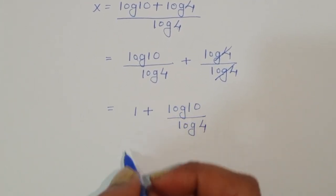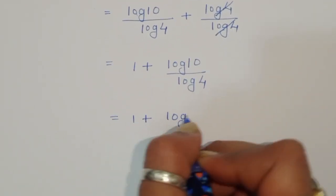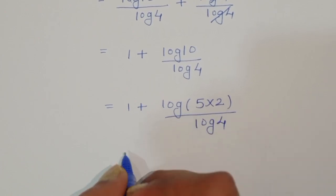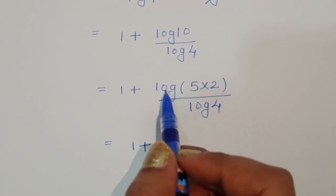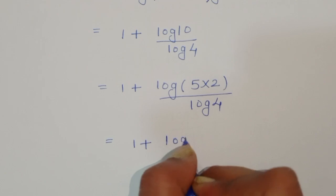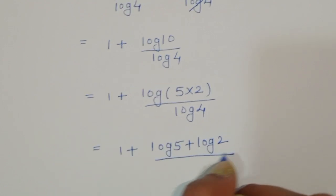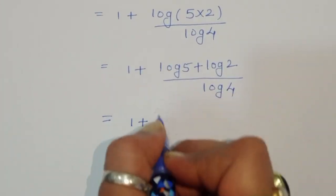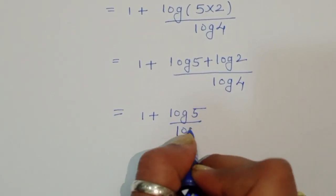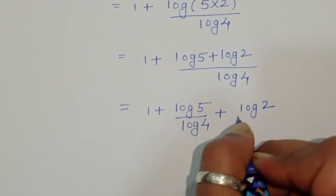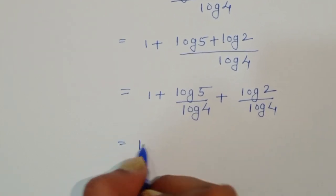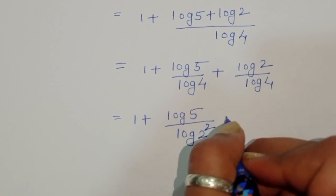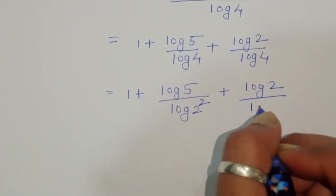Now log of 10 can be written as log of 2 times 5. Using the product formula again, log of 10 equals log of 5 plus log of 2. So x equals 1 plus log of 5 plus log of 2, all divided by log of 4. Separating terms: 1 plus log of 5 divided by log of 4 plus log of 2 divided by log of 4. We can write log of 4 as log of 2 squared.